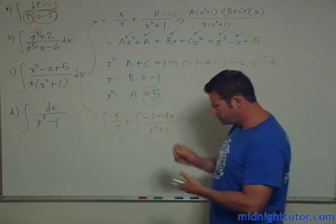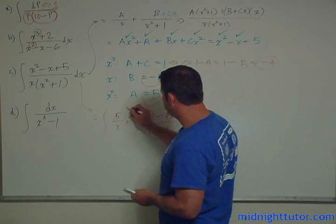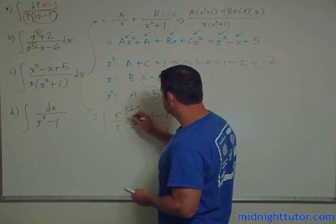So we have these two integrals. This one, obviously, 5 over x is 5 ln x. We're done with that.